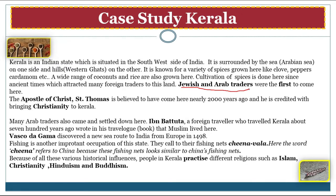Another important occupation of people in Kerala is fishing. They call their fishing nets 'Cheena Vala,' where the word 'China' refers to China because these nets look similar to Chinese fishing nets. Because of all these historical influences, people in Kerala practice different religions such as Islam, Christianity, Hinduism, and Buddhism, and all people live together very peacefully — showing that people with many differences can live together in harmony.